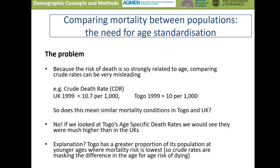If we're interested in comparing mortality between populations, we have to age-standardize because of the strong relationship between mortality rates and age. Simply comparing crude death rates can be very misleading. In 1999, the crude death rate in the UK and in Togo was very similar, around 10 per thousand, and we might conclude that we see similar mortality conditions in Togo and the UK. But that would be a mistake, because if we looked at Togo's age-specific death rates they would actually be much higher than the UK's. The issue is that Togo has a greater proportion of its population at younger ages where the mortality risk is lowest, and these crude death rates are masking the differences in the age-for-age risk of mortality.